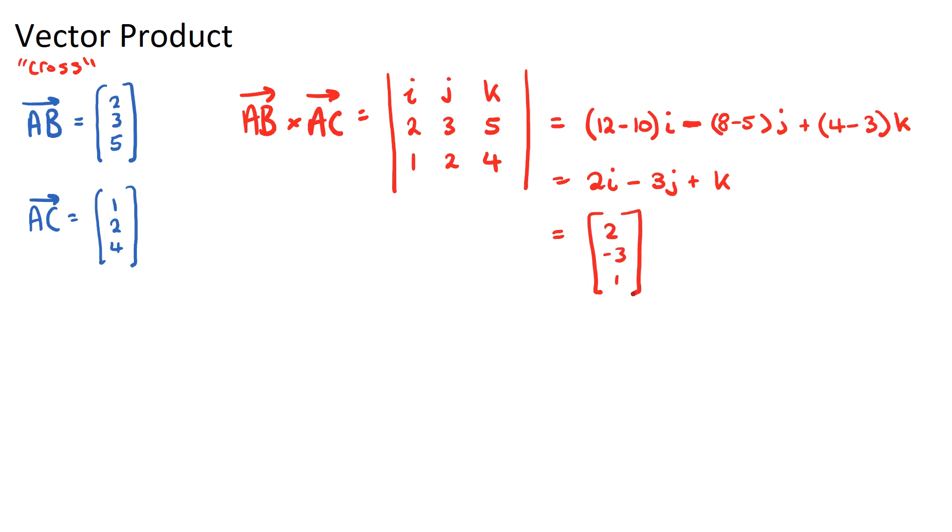So that's how we do the vector product. Hopefully you followed those steps. AB cross AC is different to AC cross AB. It's actually the negative answer, because notice that the rows would be different, so these equations would all be slightly different, and you'll get the negative answer of this.